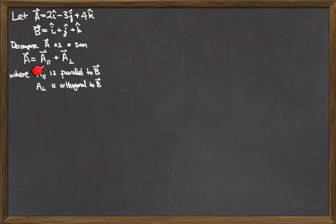I'd like to write A as a sum, where the first term is what I'm going to call A parallel, and the second term I'm going to call A orthogonal. A parallel will be a vector parallel to my vector B, and A orthogonal will be a vector which is orthogonal to B.